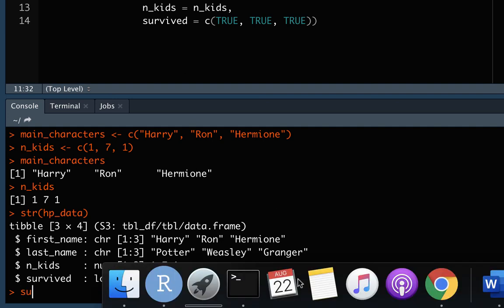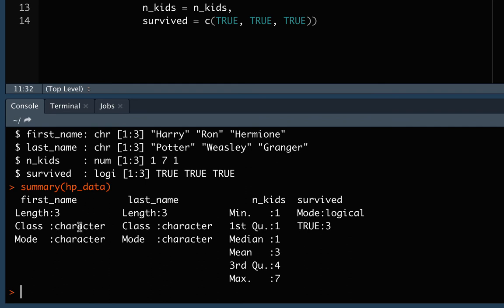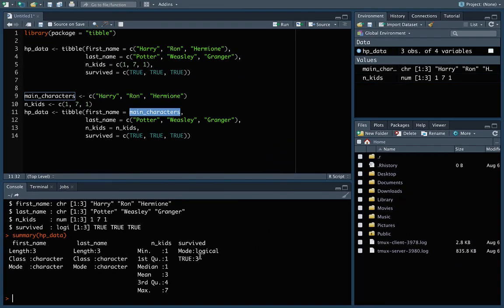We can look at summary as well, and you can see now it's broken it down in a different way by each of the column names. For those that are characters, it tells us how long it is and that it is a character, but for some of the others like the numeric and logical, it gives us a bit more information. For numeric, it gives us information about the minimum, maximum, median, and mean. For survived, it counts up the number that we have in true and false. In this case, they were all true, so it just tells us there were three in true.